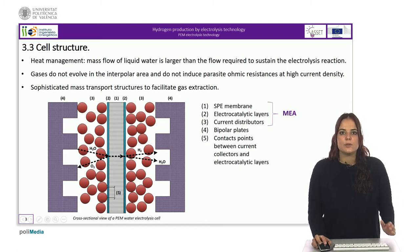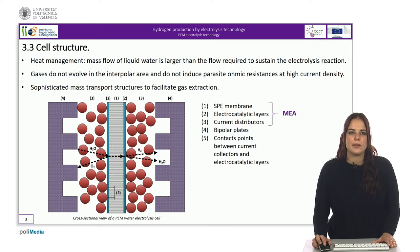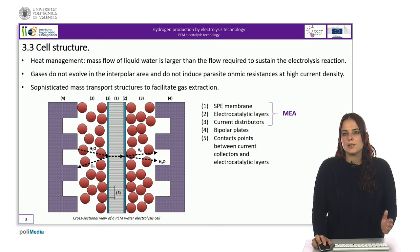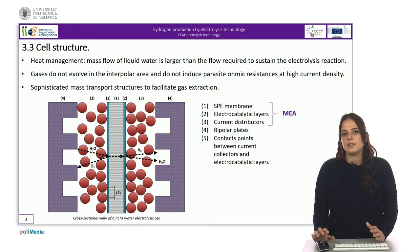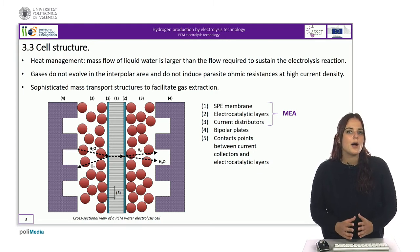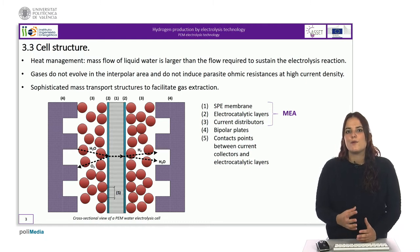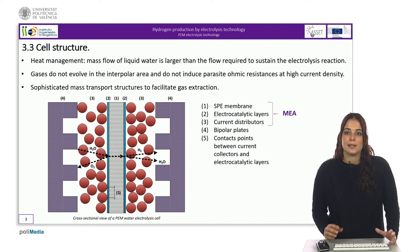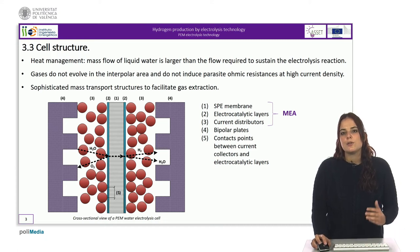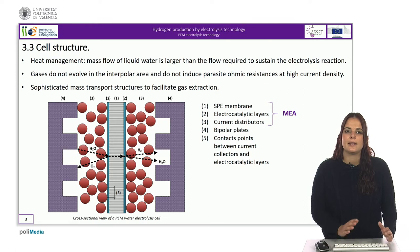With such a design, gases do not evolve in the interpolar area and do not induce parasitic resistance at high current density, when the gaseous production is such that individual gas bubbles tend to coalesce and form a resistive gaseous film. The price to pay for such an arrangement is the sophisticated mass transport structures required to facilitate gas extraction away from the reaction sites. In a PIM water electrolysis cell, gases formed in the catalytic layers are extracted at the rear of the membrane electrode assembly through porous transport layers pressed against the catalytic layers.